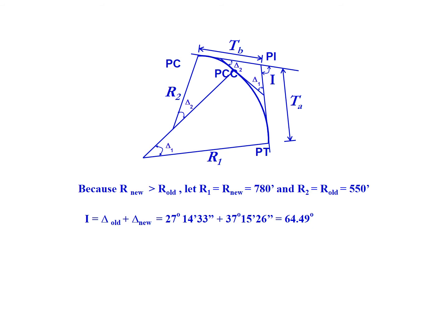Because the new radius is larger than the older radius, we're going to set R1 equal to the new radius of 780 feet. That R1 is important nomenclature for compound curves. We'll make R2 be the radius of the existing or older curve of 550 feet.